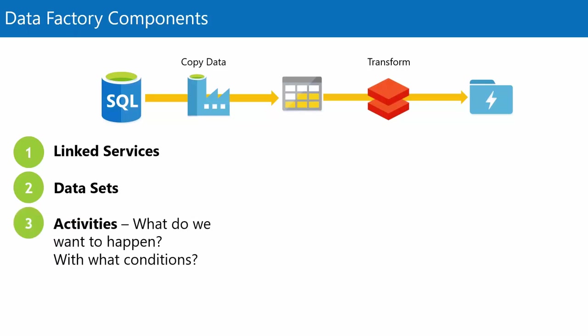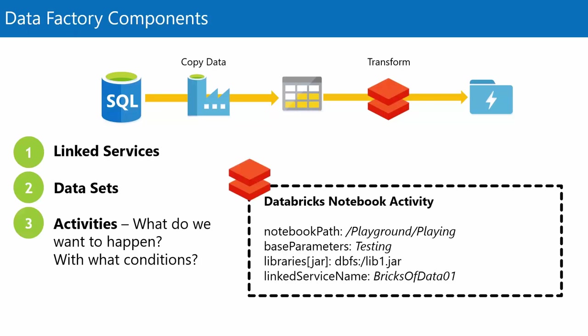The third component is activities. Activities are the instructions for the service we want to invoke — very bespoke information. If we're going to have an activity to call a Databricks notebook, we need to give tailored information in our JSON for the activity so Data Factory knows what it's asking of that invoked service.